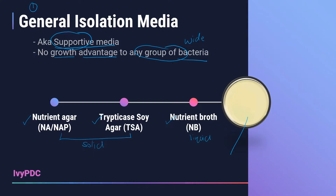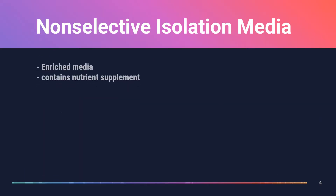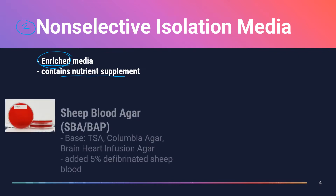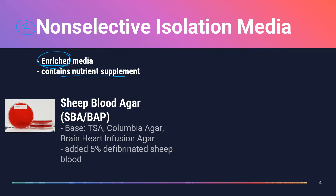These general isolation media have a pale color, ranging from light yellow to amber. The second type is the non-selective isolation media, considered an enriched media because it contains extra nutrient supplements that support organism growth. An example is sheep blood agar (SBA or BAP). The base used to make sheep blood agar is trypticase soy agar; other bases include Columbia agar and brain heart infusion agar.